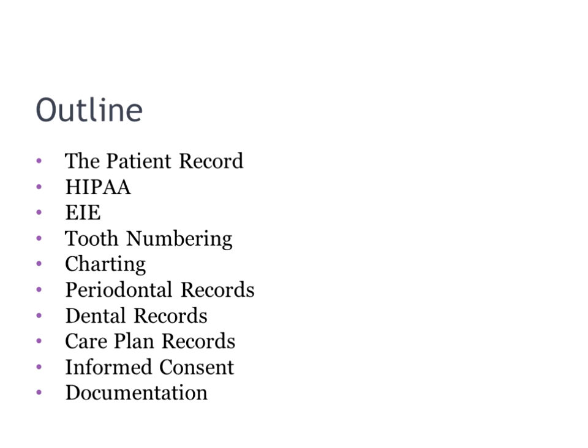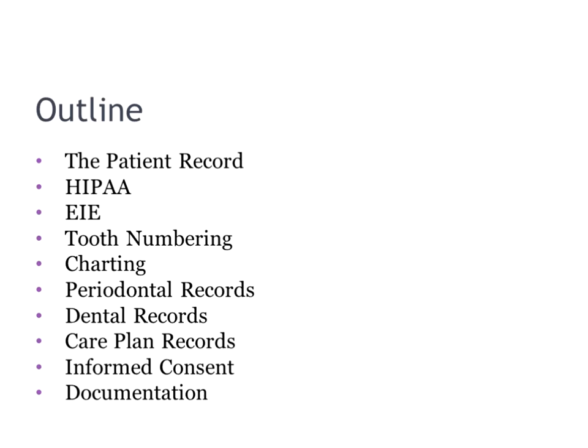This is an outline of what we are going to be talking about: the patient record, its purposes and characteristics, the components of the patient record, the handwritten record, the electronic record, HIPAA, documenting the various steps in our process of care — including the extra oral/intraoral examination, tooth numbering systems, charting, periodontal records, dental records, care plan records, informed consent, and documentation.